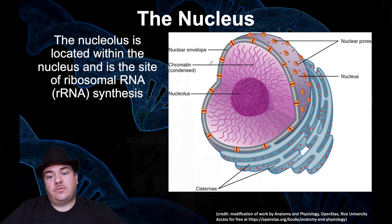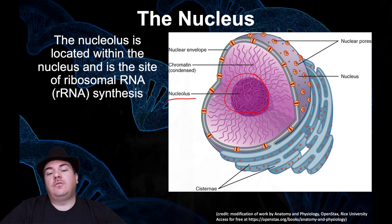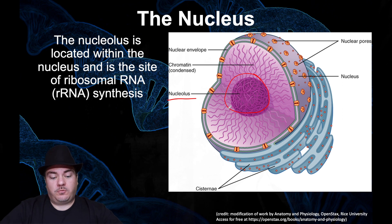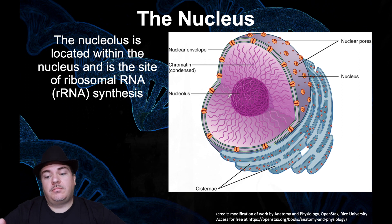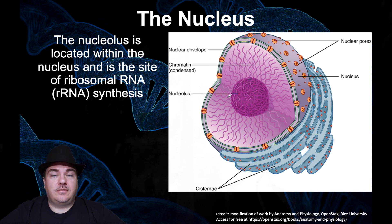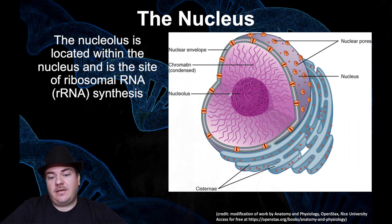If you are looking at the nucleus underneath the microscope, you'll often find a dark spot inside the nucleus. That's called the nucleolus. The nucleolus is where you build your ribosomal RNA, which is a component of the ribosome. The ribosome is built out of two different types of things: proteins and ribosomal RNA. So the ribosomal RNA is built inside the nucleolus, which is inside the nucleus.